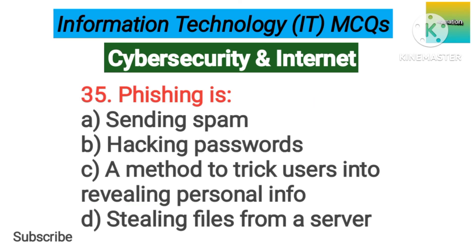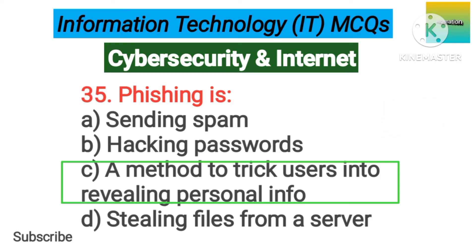Number 35. Phishing is option A: Sending spam. B: Hacking passwords. C: A method to trick users into revealing personal info. D: Stealing files from a server. The correct answer is option C, a method to trick users into revealing personal info.